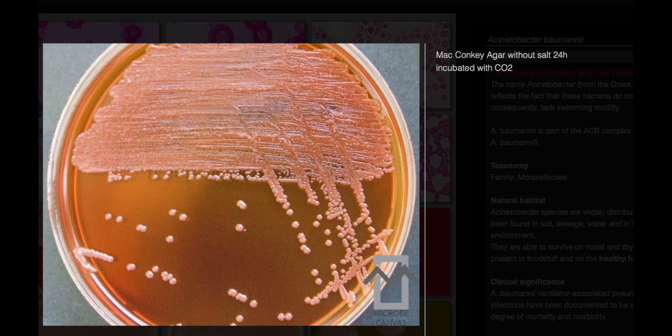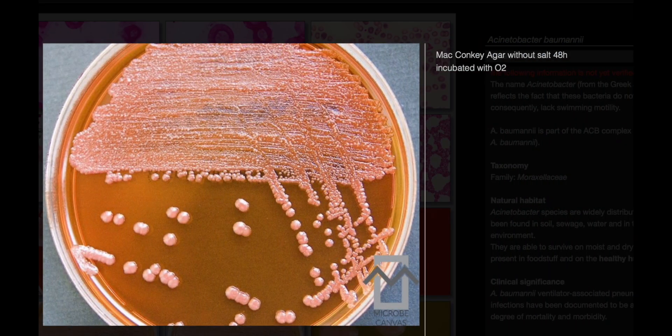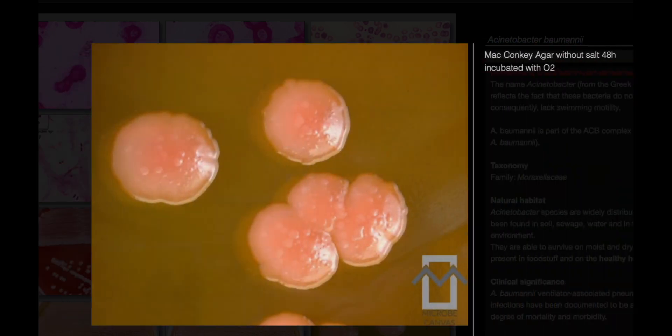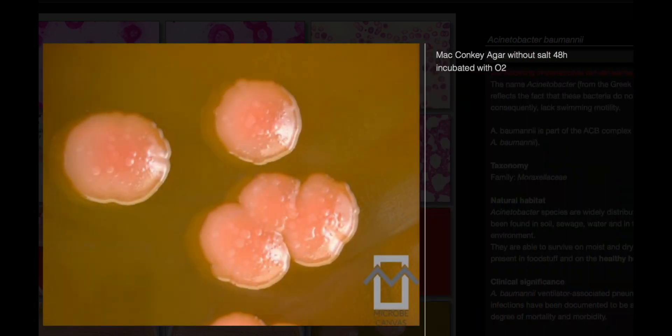Encapsulated strains often produce non-pigmented and mucoid colonies. On MacConkey agar, colonies are pale but may turn pink. Notably, Acinetobacter species do not grow on Brucella blood agar.